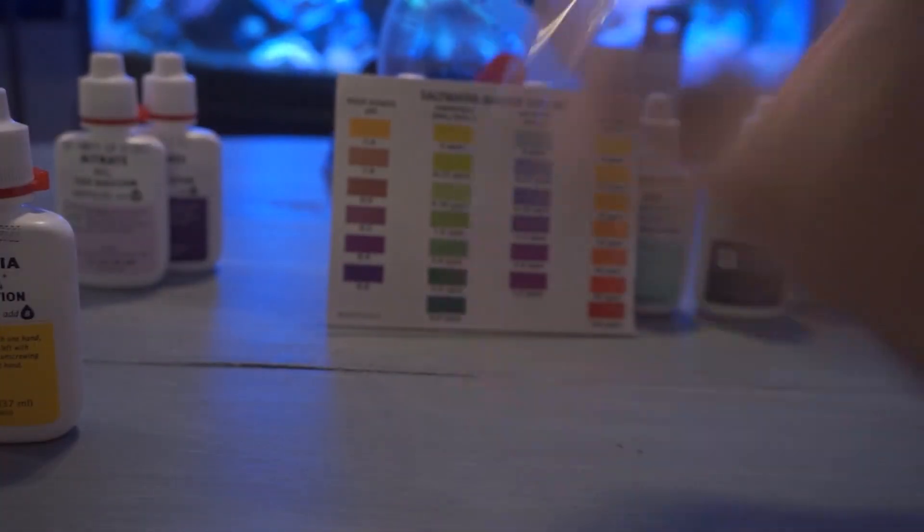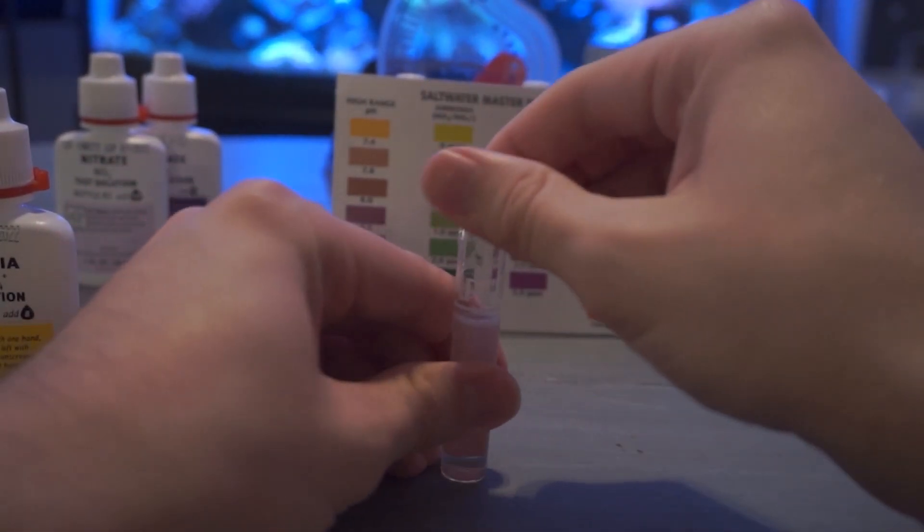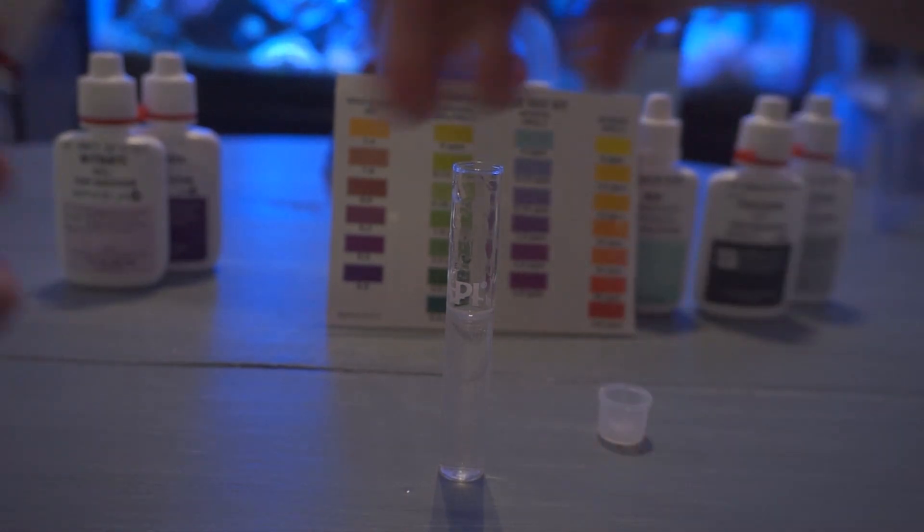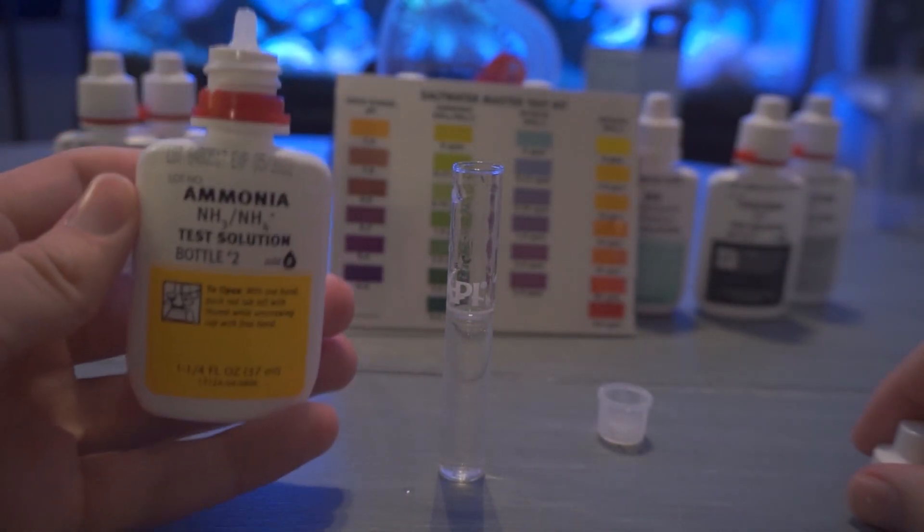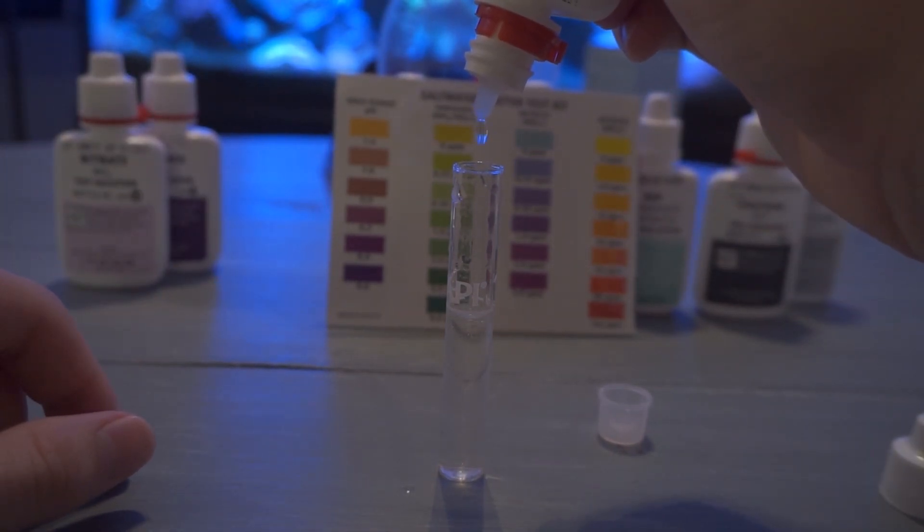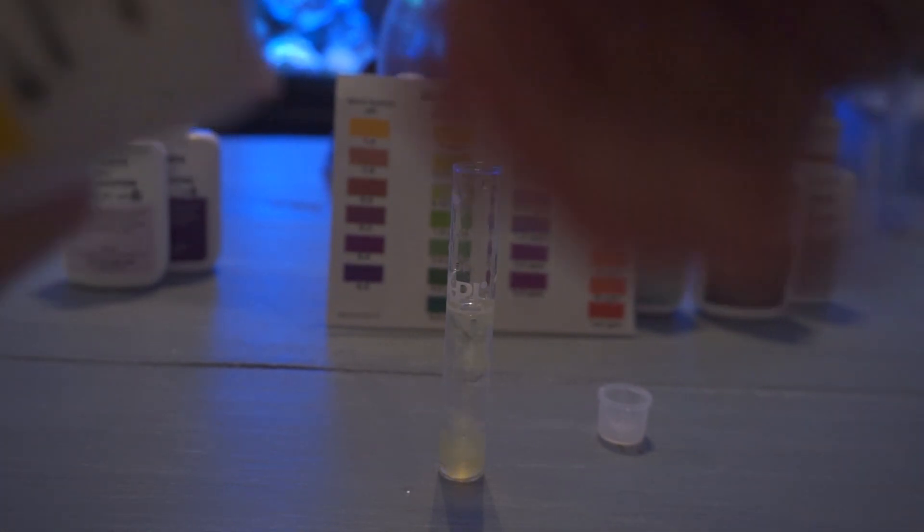So once we put eight drops of bottle number one we're shaking it up for about 10 seconds, putting the cap off and dropping in the next bottle, bottle number two, at eight drops. Now once we put these in here we'll definitely start to see a more coloration and especially whenever we shake it up. Ammonia is probably the one that has to sit the longest in my experience to actually change to a certain color. So give it some time once you put it in there. Shake it up and let it sit.